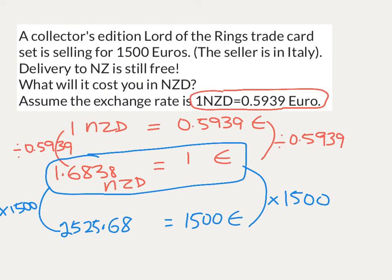Let's check that answer and see if it makes sense. We've got 1,500 euros, and we know from our exchange rate that 1 NZD is worth less than 1 euro. So it's going to cost more than 1,500 NZD to buy the trading card set — which matches our answer of 2,525.68 NZD. That's how we solve those types of problems.